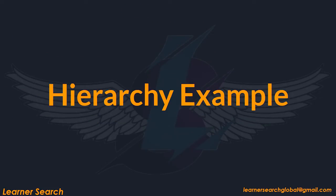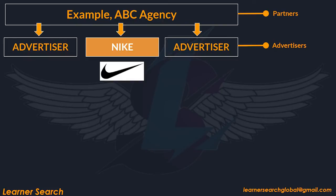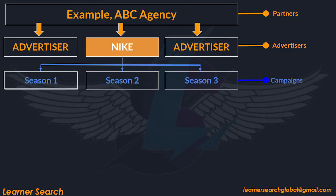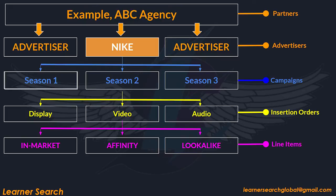Let's understand the hierarchy of this platform with an example. ABC agency is created as a partner. The agency contains a number of advertisers, so let's assume we created three advertisers under ABC agency. One of the advertisers is Nike. Nike is running three campaigns for Season 1, Season 2, and Season 3. Nike plans to run Season 2 with display, video, and audio ads. They created IOs with display, video, and audio separately. This video campaign is targeted with different audience segments like in-market, affinity, and look-alike. So they divided these audiences by creating different line items for each one.